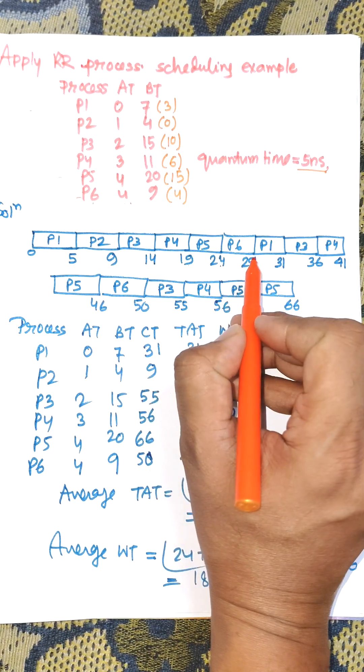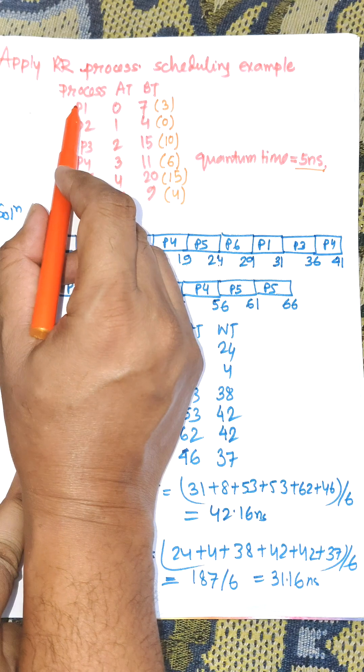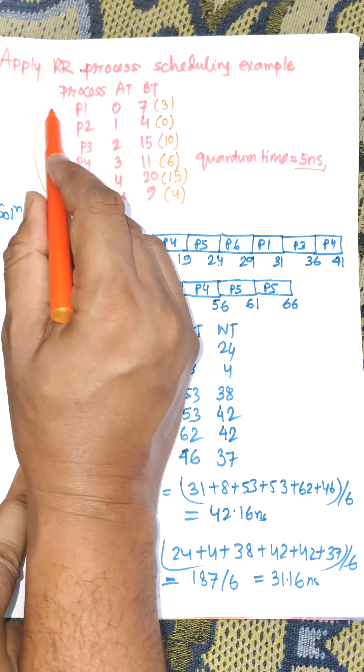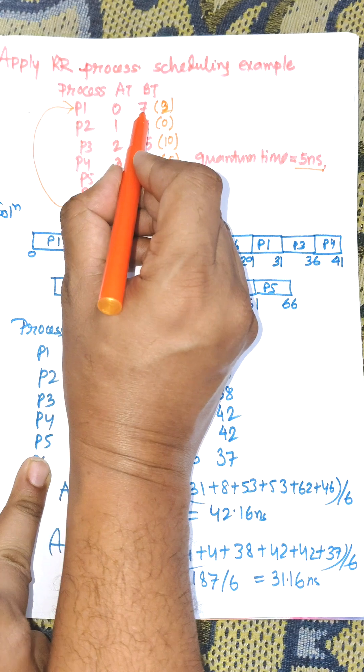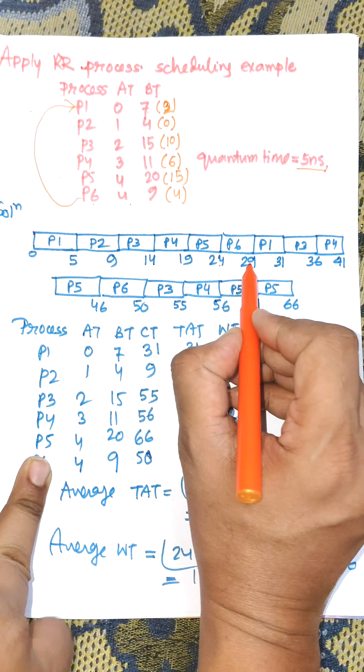Now it goes to P1 again in the round robin system, which is like a circular queue. Remaining time for P1 is 2, which is executed: 29 plus 2 equals 31. P1 finishes execution.